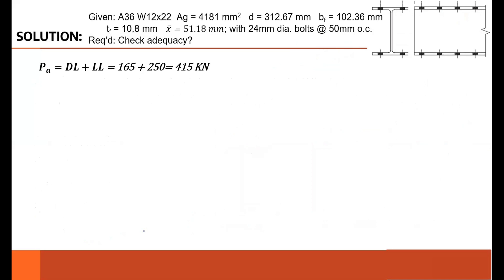We're asked to check for adequacy. I solved first for the total load combination for ASD: just add the dead and live load. Then I got the load combination for LRFD: 1.2 dead, 1.6 live. So those are the loads.